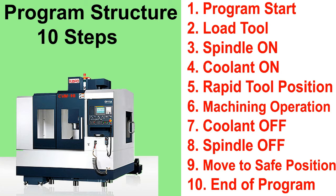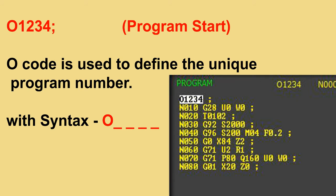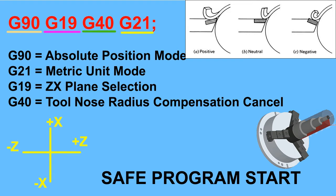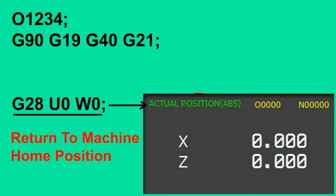These are the ten steps which every CNC program follows. Now let us understand them step by step more precisely. Step 1 is program start. In this step we write a unique program number starting from O — for example, O1234. Then we write some safety codes: if we write our program in the metric system we use G21, and if we use absolute programming we use G90. We can also write G28 U0 W0 to bring our tool to the home position.